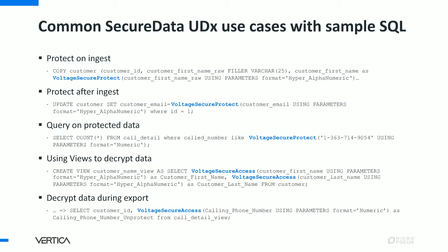Let me get into the meat of what the UDX does. If you know SQL, this will be pretty straightforward. You'll see the COPY command used widely in Vertica to get data in. So let's protect that data when we're ingesting it — grab it from a CSV file and put it straight into Vertica, but protect it on the way. We have voltage_secure_protect as added syntax to the Vertica SQL. That allows us to say we're going to protect the customer first name using the parameter hyperalphanumeric — that's our internal format name within Secure Data's API.